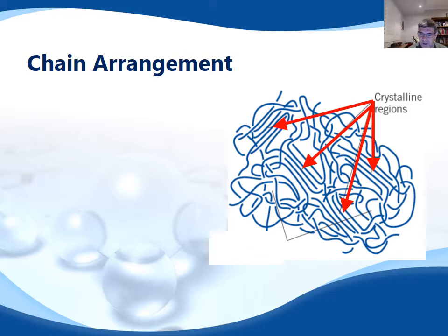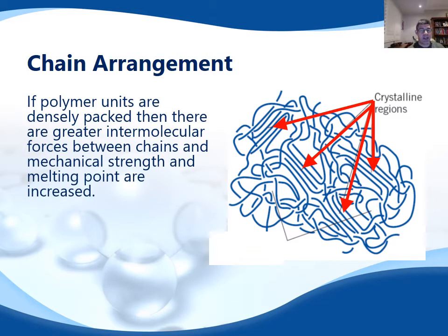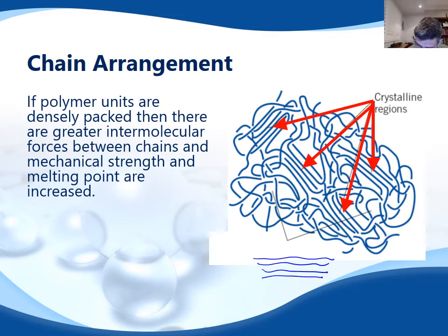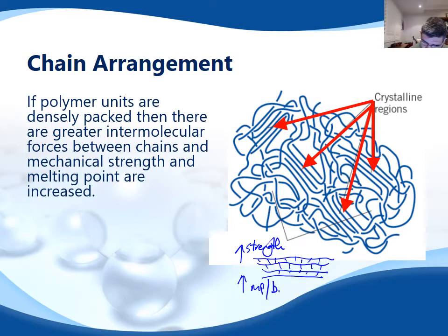The chain arrangement can also change, and this is particularly relevant when looking at low-density polyethylene and high-density polyethylene. Where we pack the polymer units very densely together, we have greater intermolecular forces between the chains. If those chains are nice and straight, we get lots of dispersion forces occurring between them, which increases their density, but also their strength and their melting points.